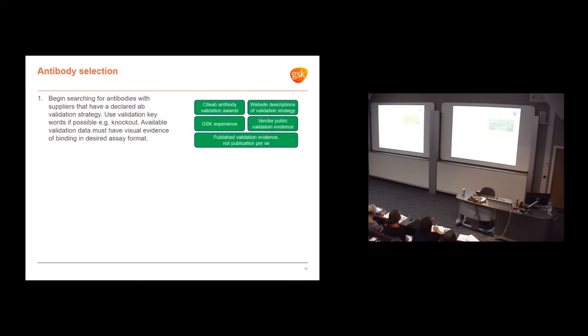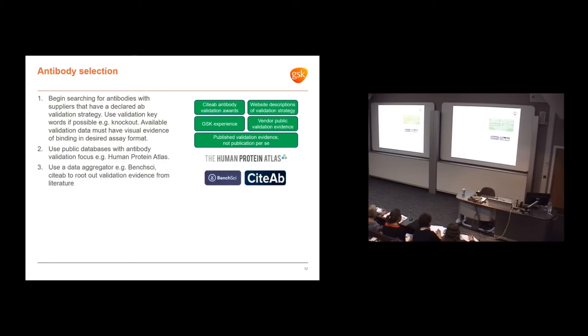For antibody selection, we search for antibodies with suppliers that have a declared validation strategy. We know they care about antibody validation. We search for keywords like knockout. Most websites don't have validation criteria as searchable filters, so you have to do investigative work. We look at databases like the human protein atlas and use data aggregation tools like BenchSci, which uses machine learning to pull validation evidence from literature, and Antibodypedia.